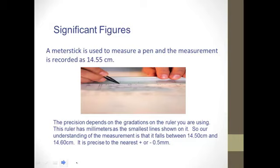So if it has millimeters as the smallest line shown, it's precise to the nearest half of a millimeter, plus or minus, on either side of the measurement. And I'm sure you've worked with precision before, but the easiest way to do it is to combine this with the millimeters as the smallest unit. Because we can only measure to the nearest half as big as the smallest unit.